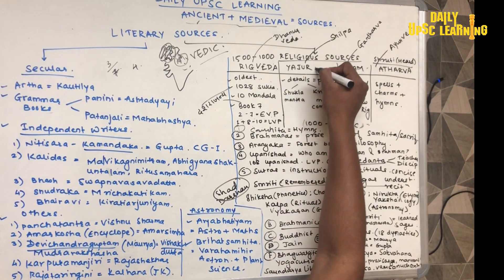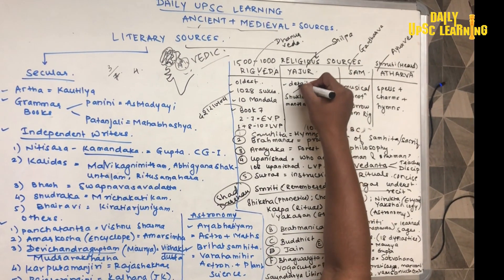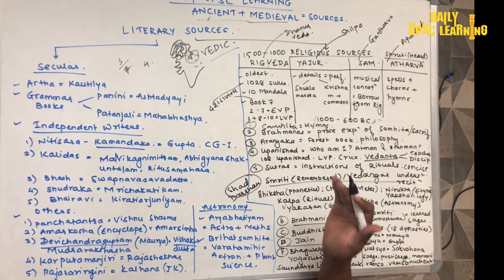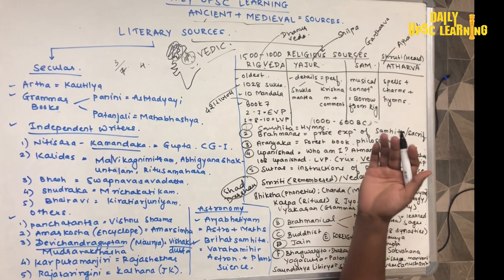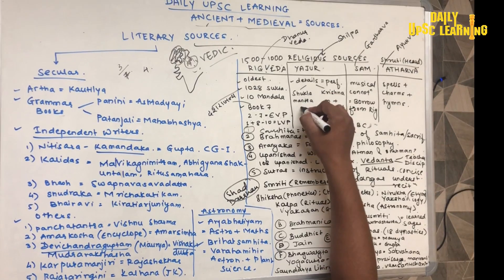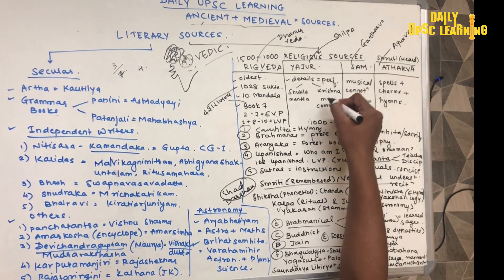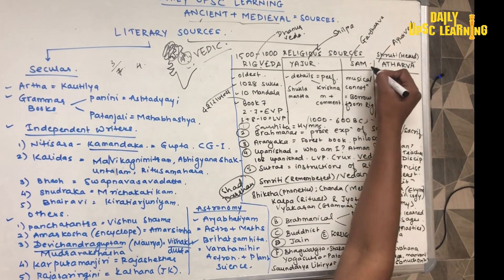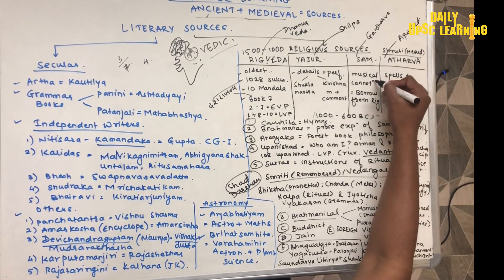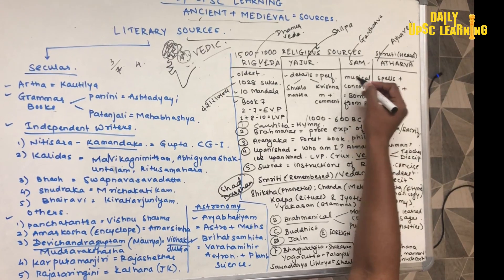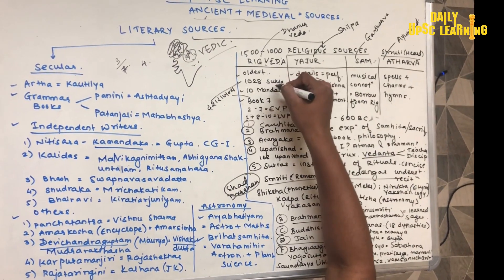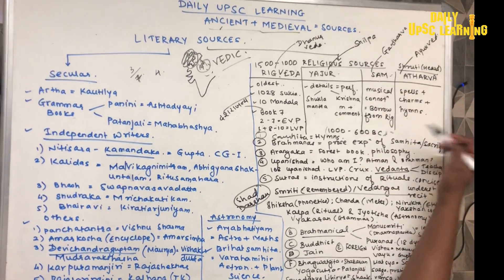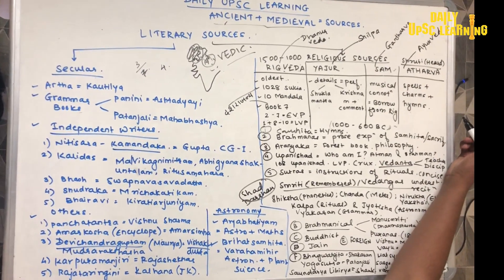Second is Yajurveda. Yajurveda has details of the performance of rituals. It has two parts: Shukla Yajurveda and Krishna Yajurveda. In Shukla Yajurveda there are only mantras, while in Krishna Yajurveda there are both mantras and commentaries. Then comes Samveda, which has only musical connotation — it explains how the mantras from Rigveda are to be sung.